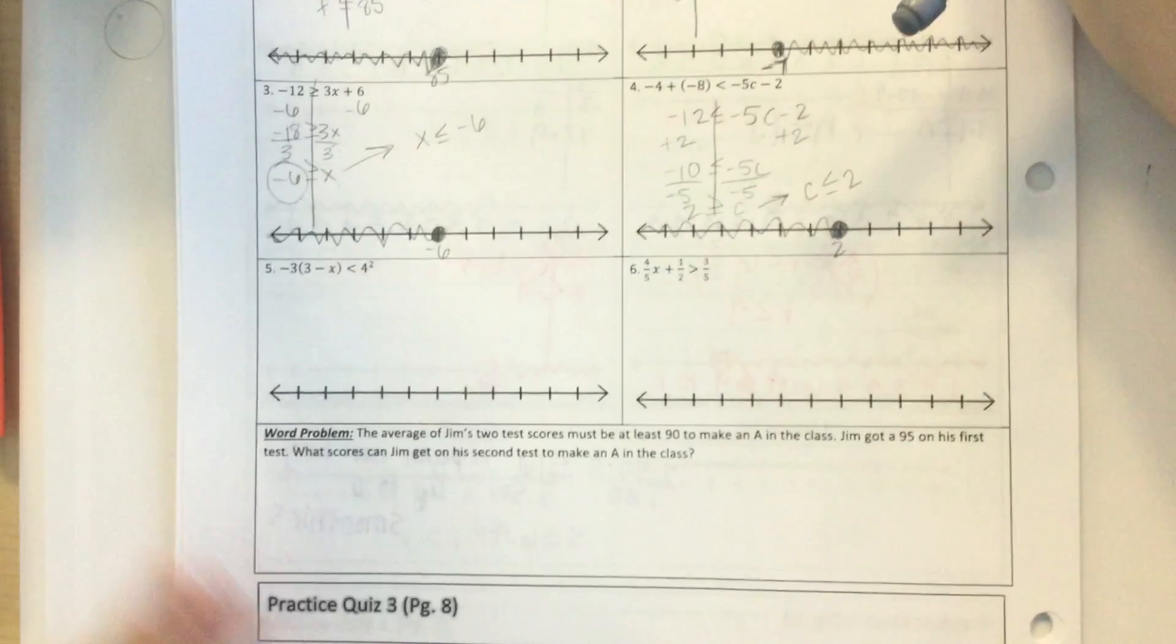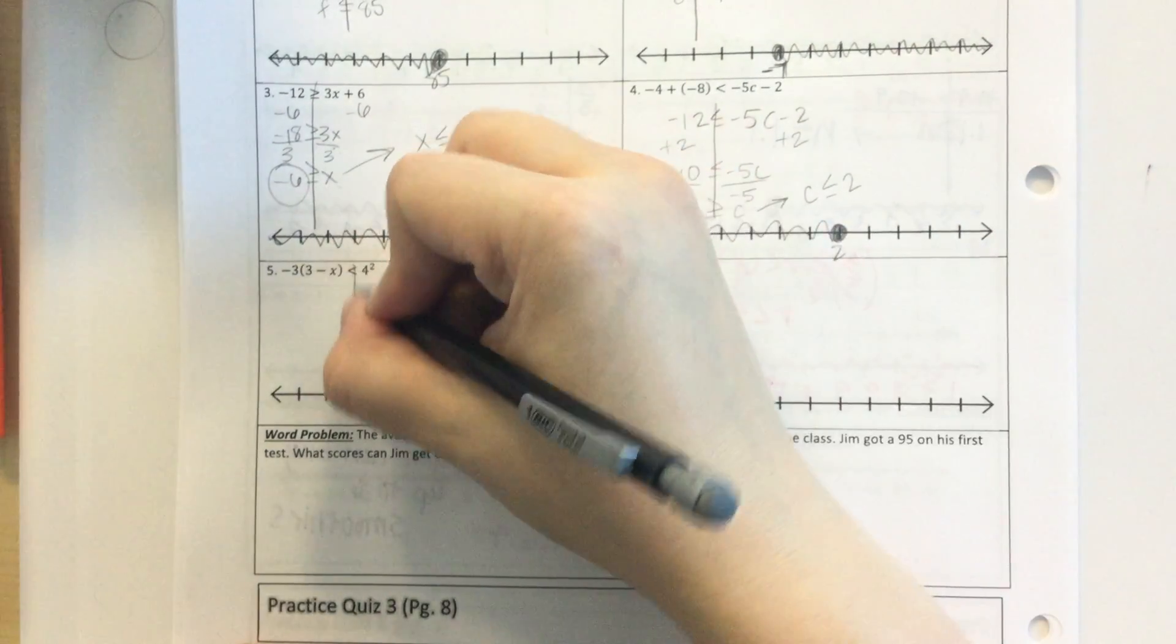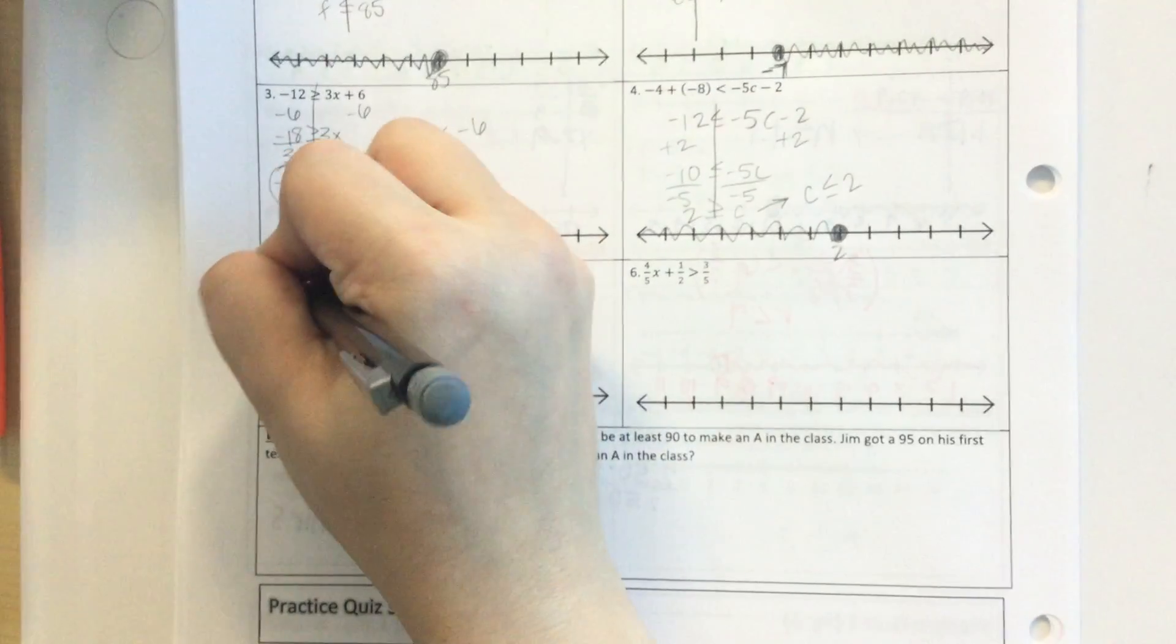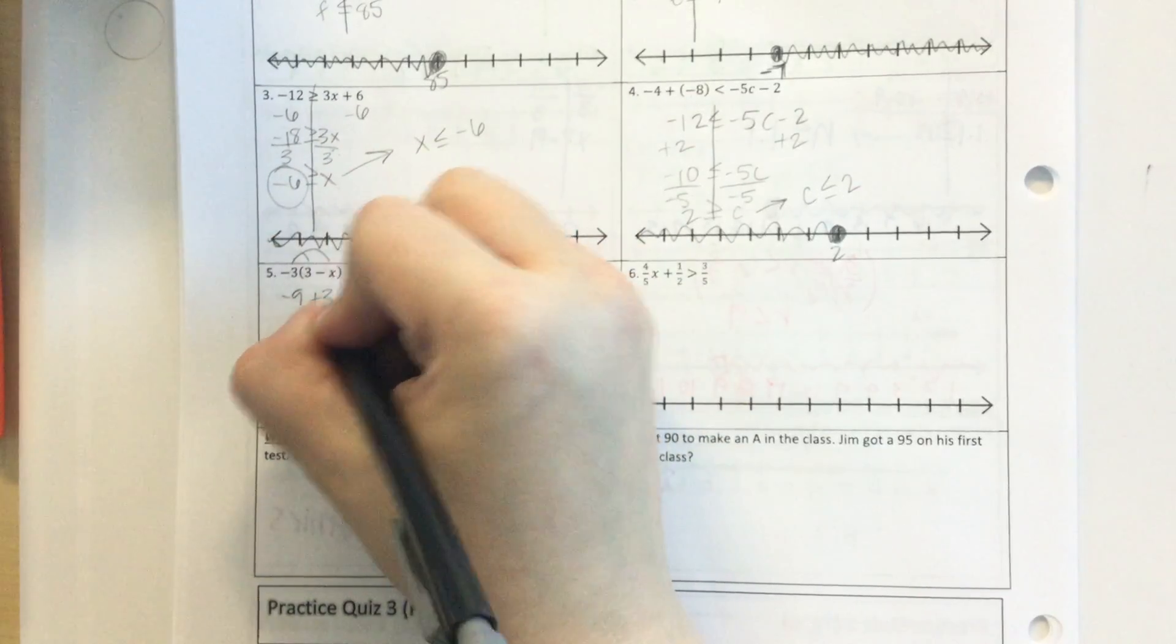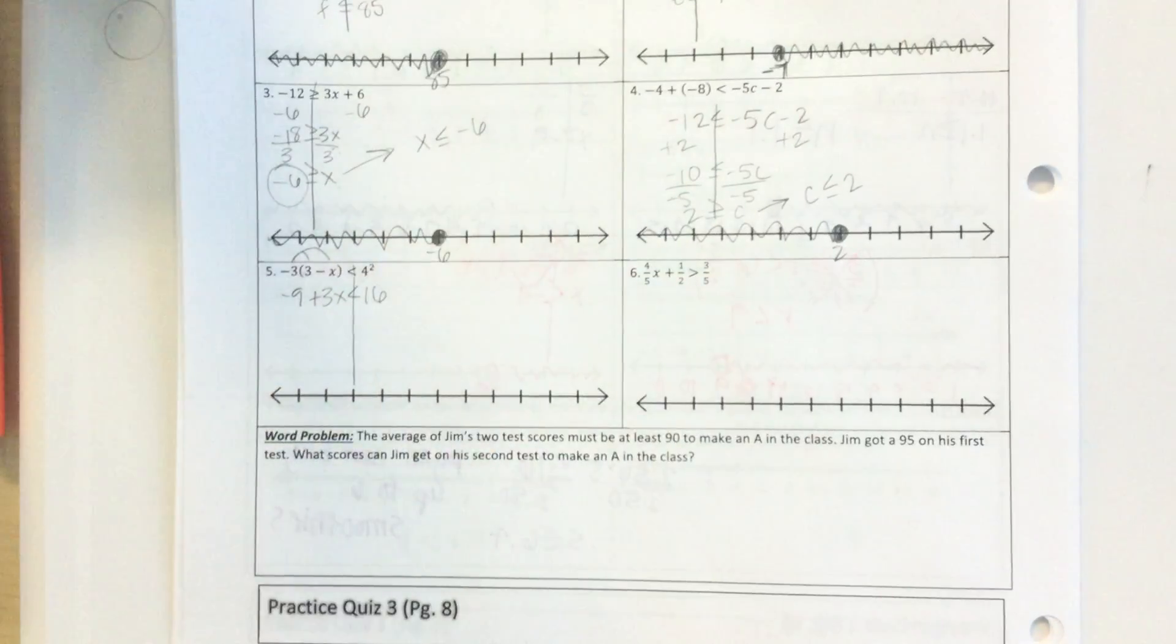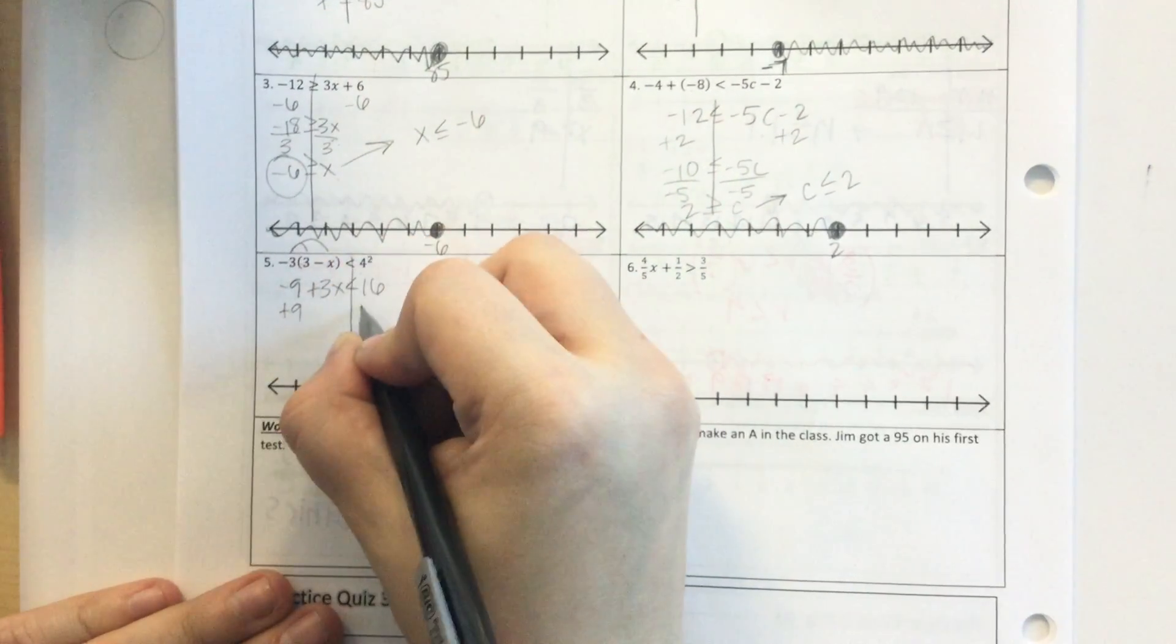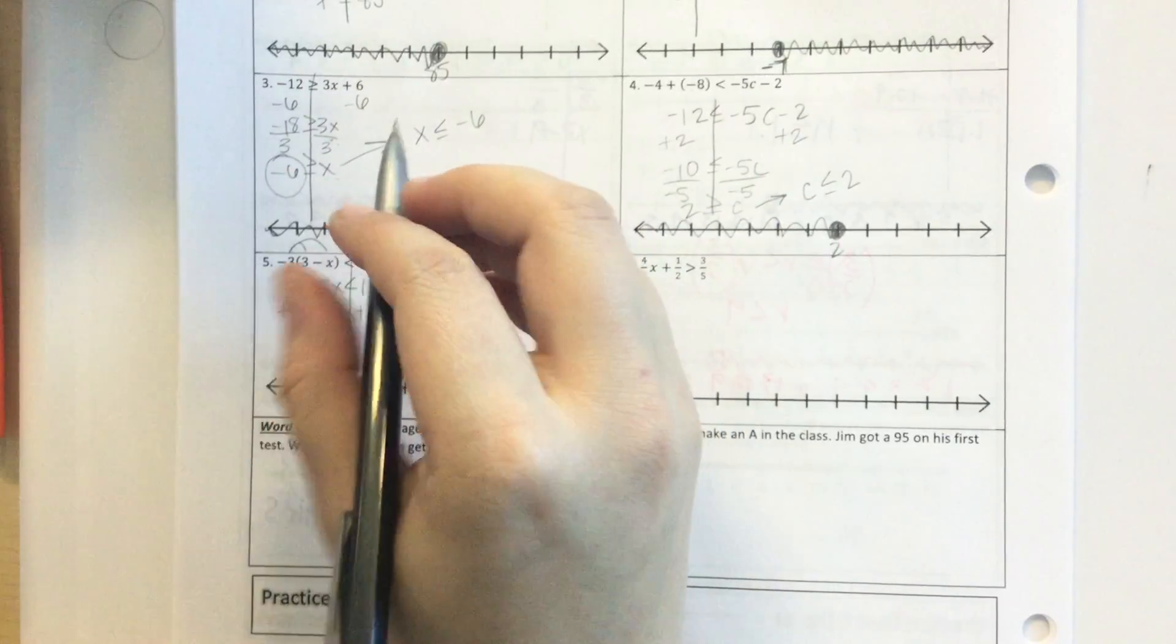All right. Two more and then a word problem. Okay. So number 5, we have to distribute. So negative 3 times 3 is negative 9. Negative 3 times negative x is a positive 3x. 4 squared is 16. Okay. Now we can start solving. So plus 9, plus 9.